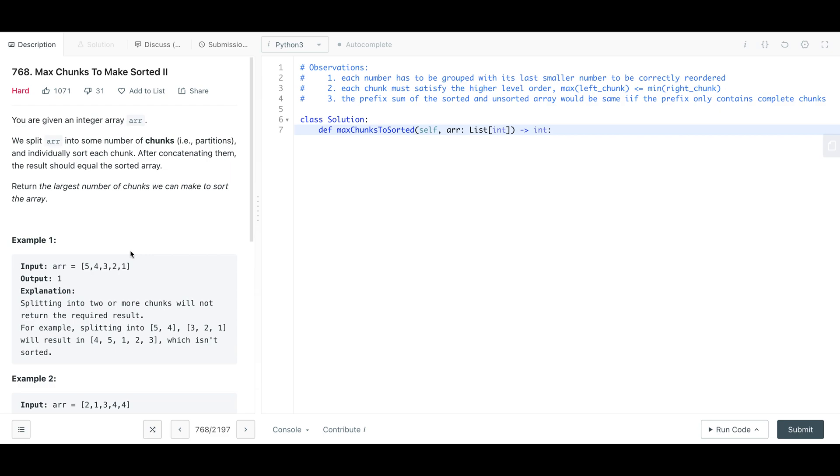The first observation is that each number has to be grouped with its last smaller number to be correctly reordered. I'll show you a diagram later to demonstrate each observation. The second observation is each chunk must satisfy a higher level order, which means the left chunk has to have a maximum value that is smaller than the minimum value from the right chunk. The last one is the prefix sum of the sorted and unsorted version of the same array would be the same if and only if the prefix only contains complete chunks.